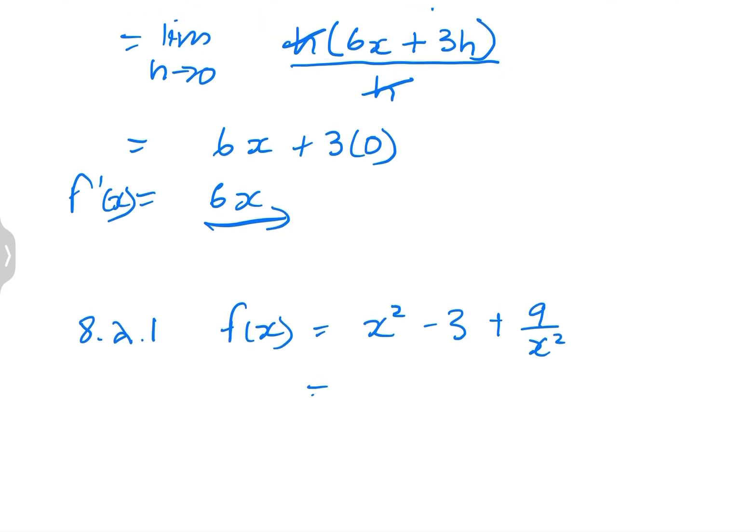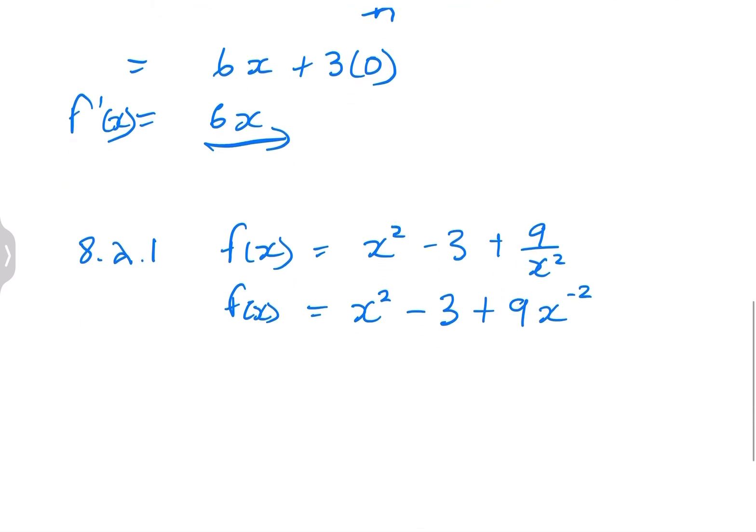And again, if you have not watched this, we've got a whole series on calculus. Please just have a look at it. You can find it in our playlists. So f(x) in this case is going to be x squared minus 3 plus 9 over x squared. So I'm going to rewrite this so that I don't have anything at the denominator in this case. So I'm going to have x squared minus 3 plus 9x to the minus 2. That's the laws of exponents.